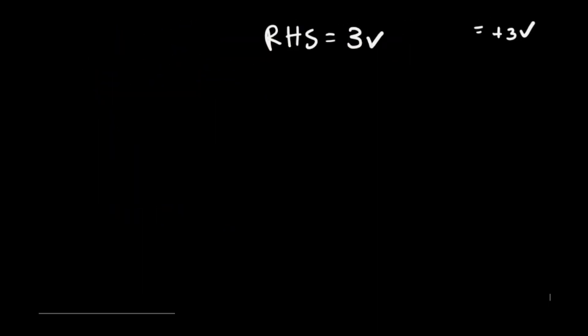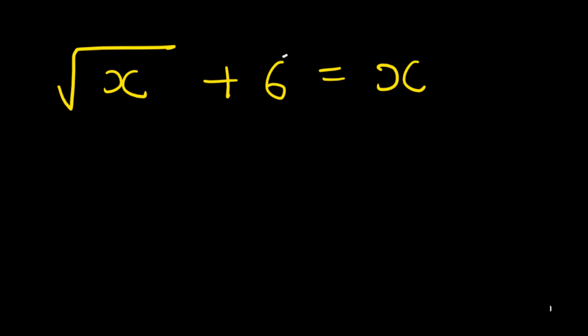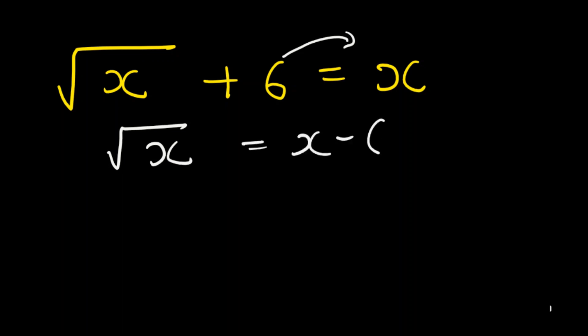Let's do another problem. Say we have the root of x plus 6 equals x. We don't square both sides immediately — we first need to isolate the square root. Remove the 6 to the other side, so you remain with the square root of x equals x minus 6.